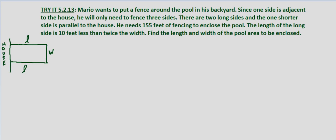So what we're looking for is the length and width of the pool area to be enclosed. So let L equal the length and W equal the width. Now what are we given? Well we know that we have two lengths. I went ahead and drew this picture over here. Again anytime we have a geometric problem we need to draw the picture for clarity's sake. So we have two lengths and one width.